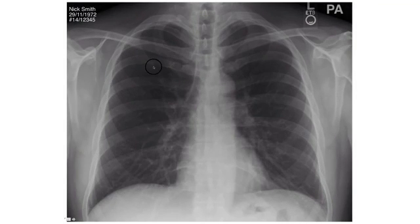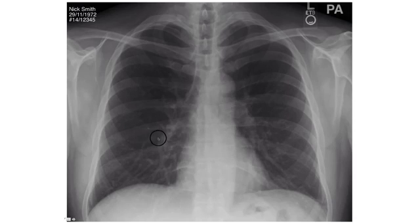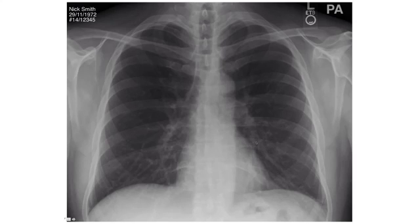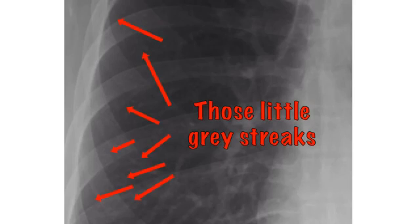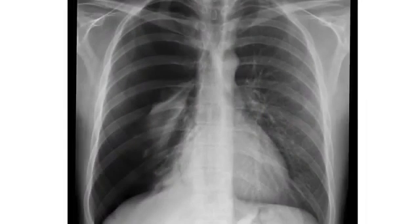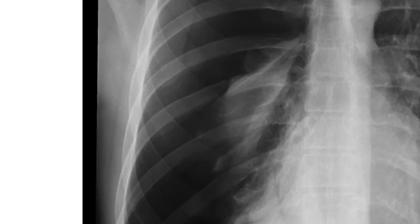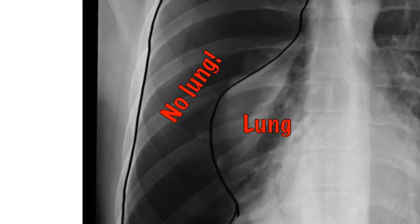Look at each of the lung zones in turn for symmetry. Compare each zone with the opposite side. Do any areas look too black or too white? If so, decide which is the abnormal side. Make sure you can see lung markings going all the way to the edge of the chest wall. If you can see the lung edge with a black area surrounding it, suspect a pneumothorax. Note the pleura are not visible in healthy people.